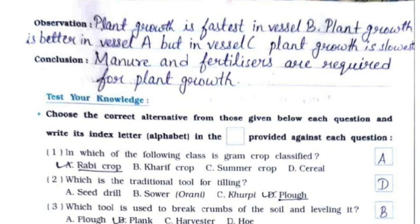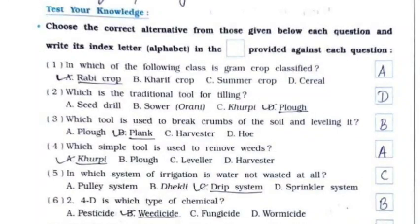The conclusion is: manure and fertilizers are required for plant growth. Now test your knowledge with MCQs. First: in which of the following classes is gram crop classified? It's option A — Rabi crop. Second: which is the traditional tool for tilling? It's option D — plow.